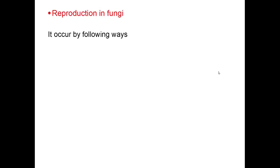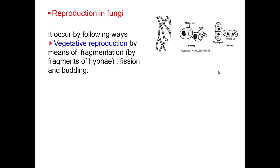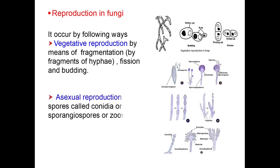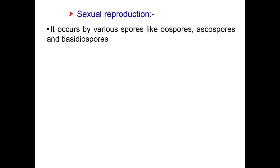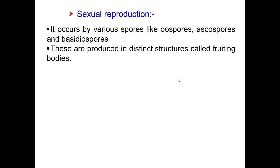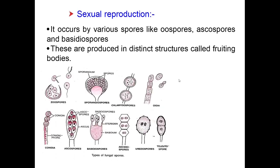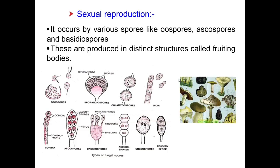Reproduction in fungi occurs by the following ways. Vegetative reproduction takes place by means of fragmentation, fission and budding. Asexual reproduction occurs by spores called conidia, sporangiospores and zoospores. Sexual reproduction occurs by various spores like oospores, ascospores and basidiospores. These are produced in distinct structures called fruiting bodies. You can look in the diagram at the various types of spores.